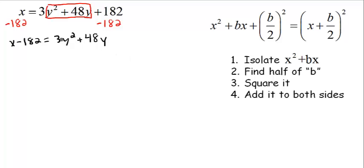Now we still have to deal with this 3 in front of the y². Instead of dividing it out from both sides, I'm going to factor it out of these two terms. So rewriting: x - 182 = 3(y² + 16y). Now we have this part isolated, at least by itself in the parentheses.